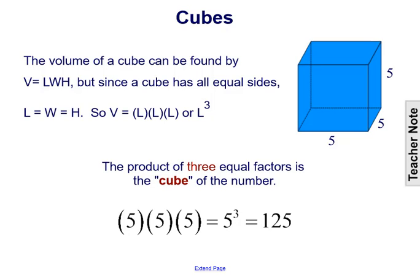So the volume of a cube can be found by multiplying the length times the length times the length. Or since you're multiplying the same thing three times, it's the length to the third. So the product of three equal factors is now called the cube of a number because of this relationship with the volume of a cube.